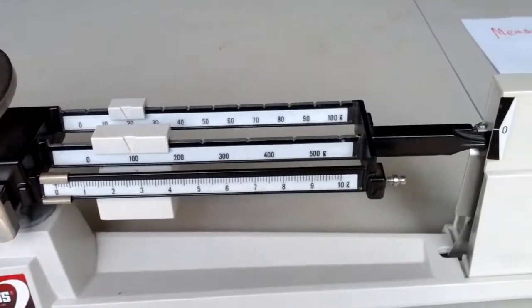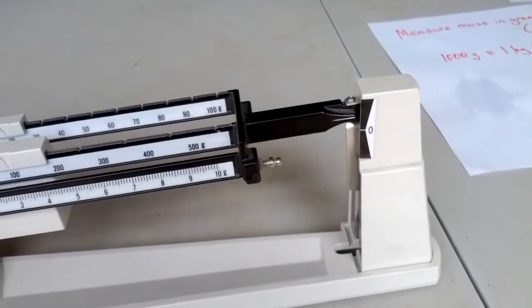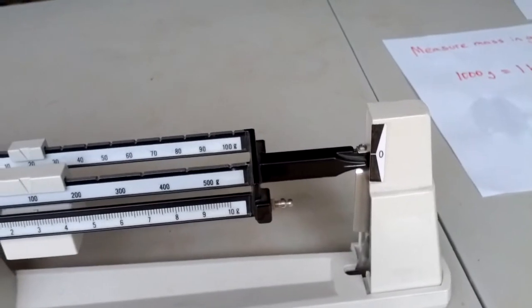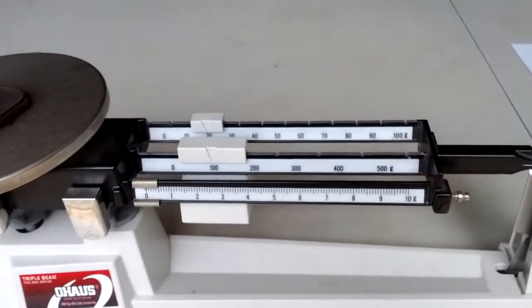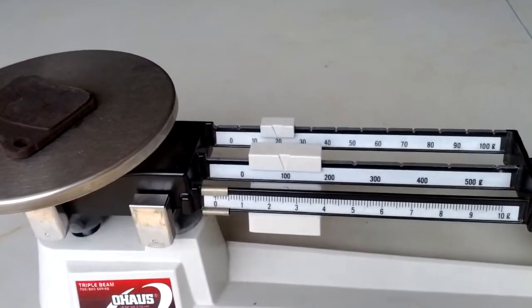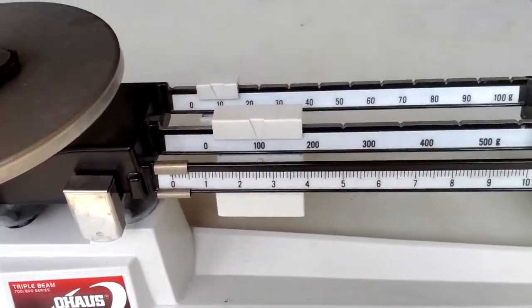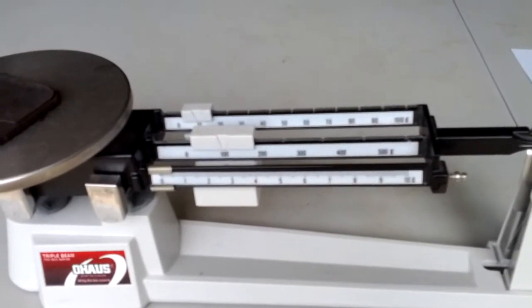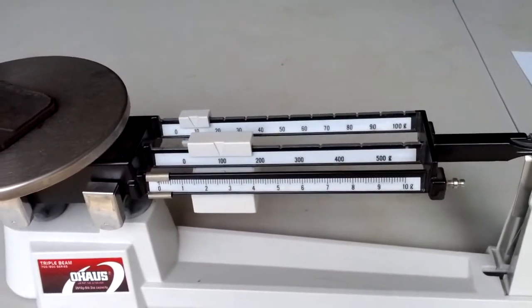So now I need to slide it over one more notch to the 20s. And I'm too far. Because now it's going all the way down. So 120 grams is too much. It has less mass than that. So I need to go back to the 10. So now we know that it has a mass of at least 110 grams.